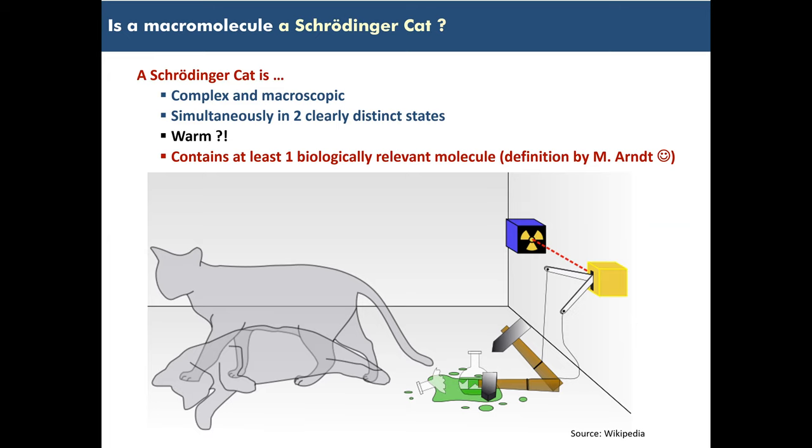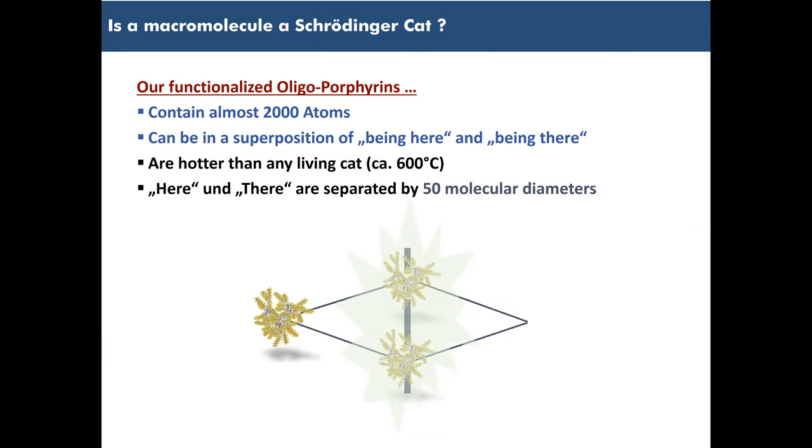And in that sense, well, a Schrödinger cat is for me something complex and macroscopic in two different, clearly distinct states. Well, I should say that it should also be warm, but because that's distinguishing our experiments from others. And it should have at least one biologically relevant molecule in it. Otherwise, it's not a cat. And actually what we have is porphyrins, and porphyrins are also part of hemoglobin. Porphyrins coated with a number of other things. And in superpositions that are clearly distinct. And there are very many atoms, 2,000 at the moment. They're very hot, actually hotter than a living cat would ever be. 600 degrees Celsius. A real cat would be dead by then. And they're in a superposition of here and there, instead of dead and alive.